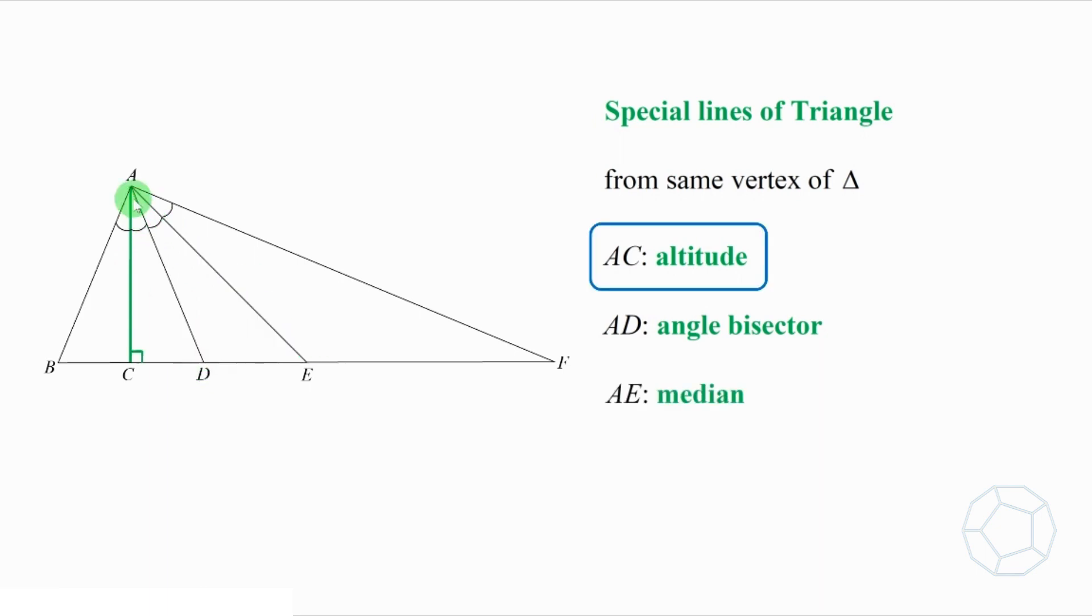The first one is just another name about height. The second one is self-explanatory because the line AD bisects angle BAF. And the third one means that AE bisects the opposite side BF. Another condition is also special because the four angles are equal. Let's call them theta. This is a good starting point to find angle BAF.